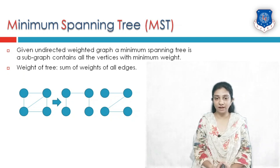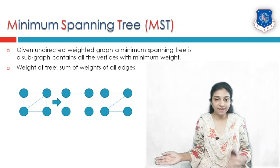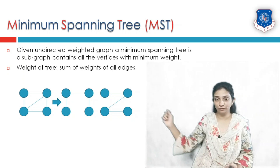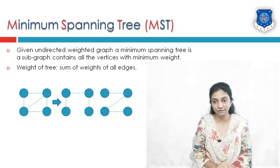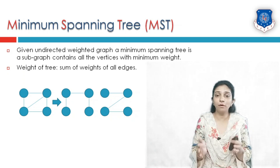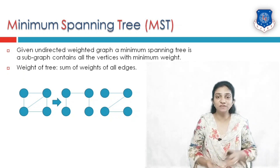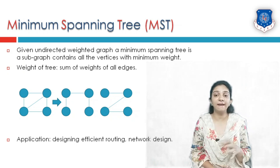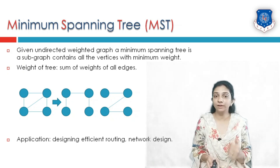For example, given a graph with four nodes and five edges, we can generate a spanning tree in various ways — from node 1 to 2, 2 to 3, 3 to 4, or other combinations. However, we must generate the tree such that its total weight is minimum. This minimum spanning tree can be produced using Prim's method. Its applications include designing efficient routing algorithms and solving network design problems.